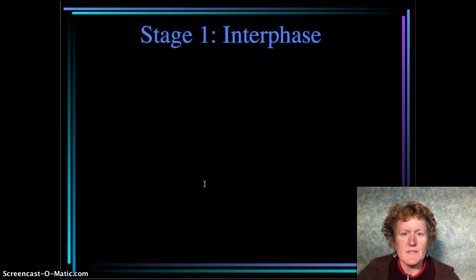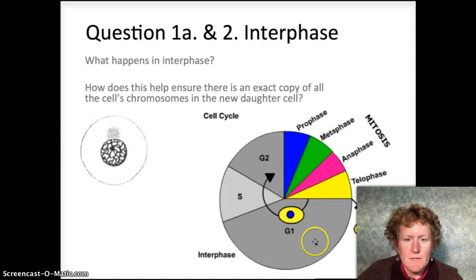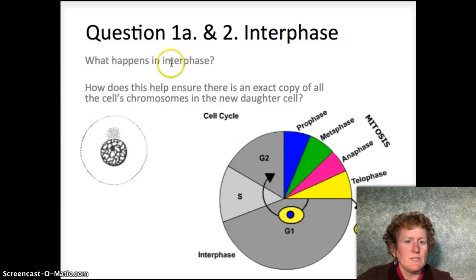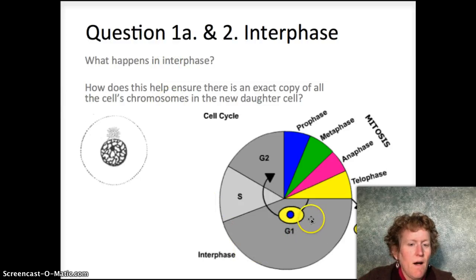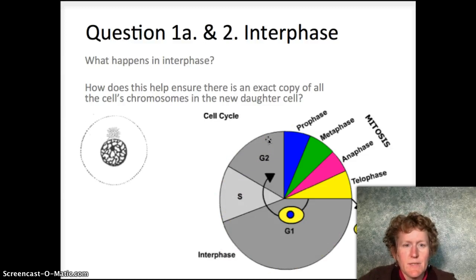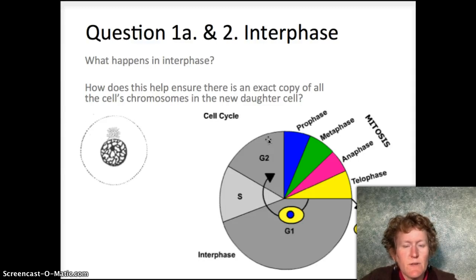Stage one is interphase — that's the first part of the cell cycle. Interphase actually has three smaller stages within it: G1, the S phase, and G2. In interphase, a whole lot happens. The cell's DNA is copied, all the cell's organelles are copied, and this is what covers the first part of question one in the table on your lab sheet.